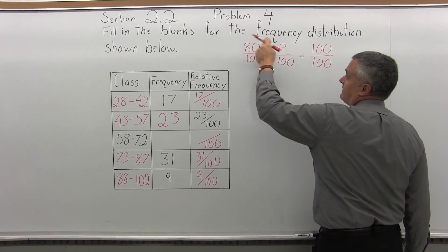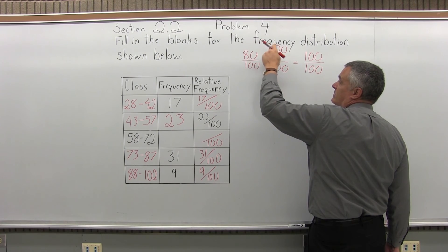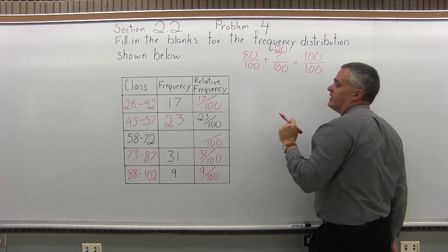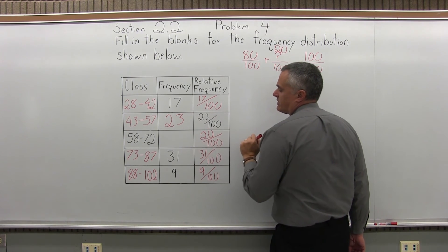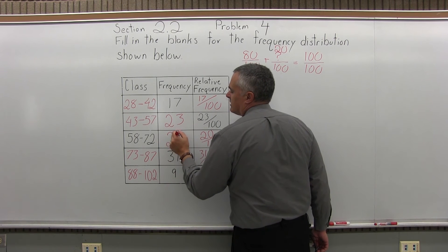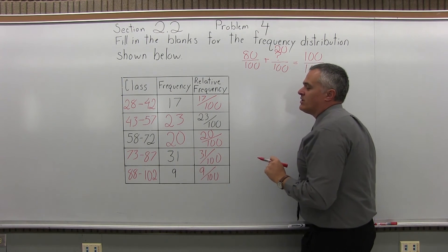Now, written this way, 80 plus some unknown amount, it must be 20. 80 over 100 plus 20 over 100 adds up to 100 over 100, which does reduce to 1. So, my missing numerator in the something over 100 was 20, which means the frequency for that class is 20. So now we've filled in all the blanks.